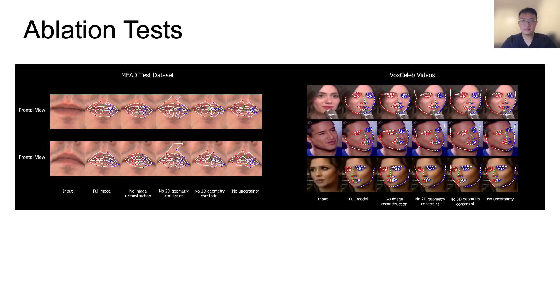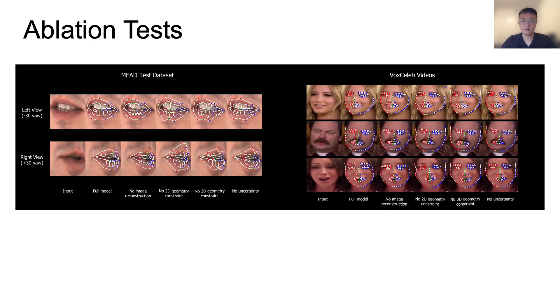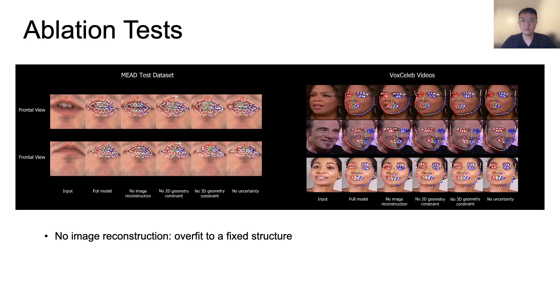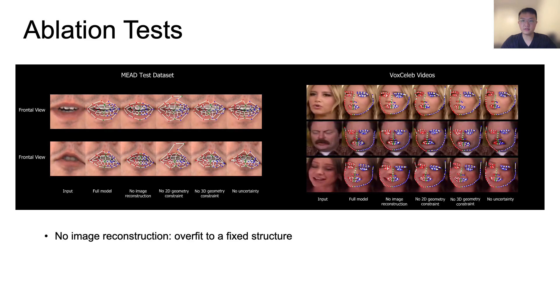We test the necessity of image reconstruction, 2D geometry constraints, uncertainty, and 3D geometry constraints. Without image reconstruction, the model overfits to a fixed structure.